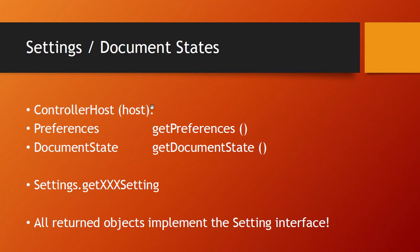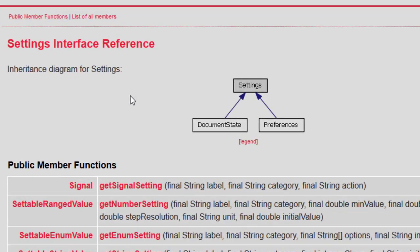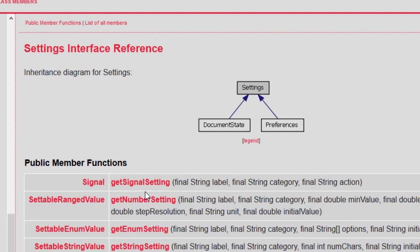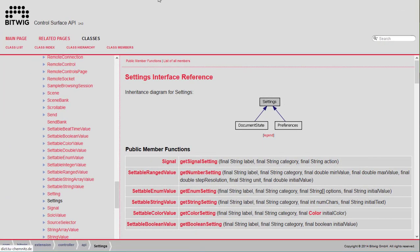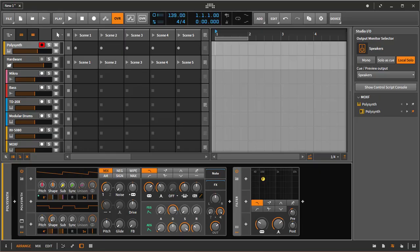Looking into settings and document states: both can be created from the controller host using the functions `getPreferences` and `getDocumentState`. Both object types are subclasses of Settings, which provides a number of features to create different widgets.